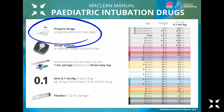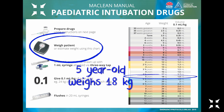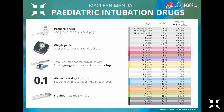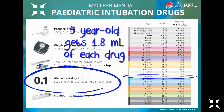Prepare drugs using the instructions. Weigh the patient or estimate weight using this chart. For example, a five-year-old weighs 18 kilograms. Give 0.1 ml per kilogram of each drug, so a five-year-old gets 1.8 ml of each drug.